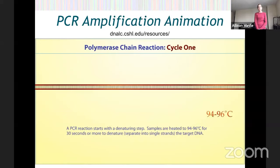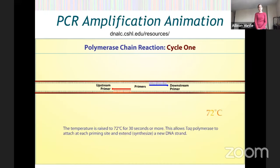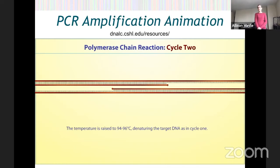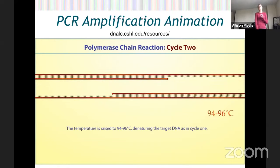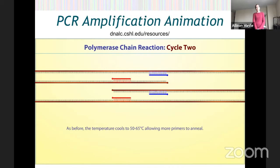Step one: the sample is heated up, hydrogen bonds holding the two strands of DNA together are broken, and the two strands are denatured or separated. Now the temperature is lowered a bit and the primers come in to find their complementary region. We use two primers when we do PCR, so we can bookend both sides of the DNA we want to copy. The temperature goes back up to 72 degrees Celsius, and this is where the Taq polymerase comes in and makes copies of all the nucleotides downstream.